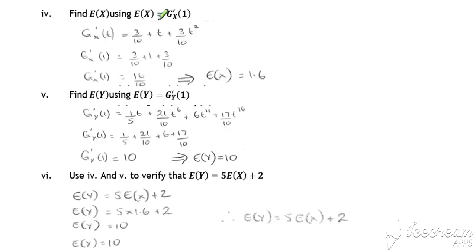If we go on now and work out the expectation for X using our normal method that differentiates and substitutes in 1, we get our expected value for X to be 1.6. And then if we work out our expectation for Y, differentiating Y and substituting in 1...